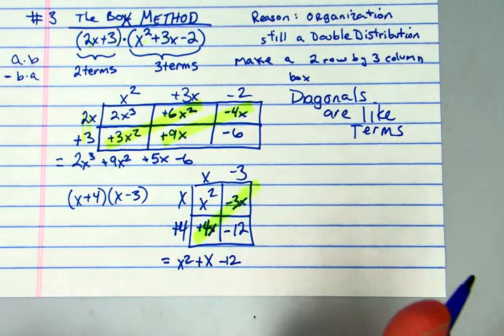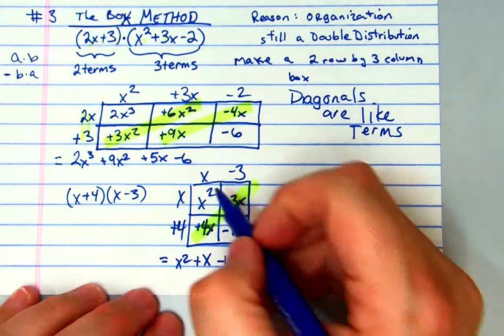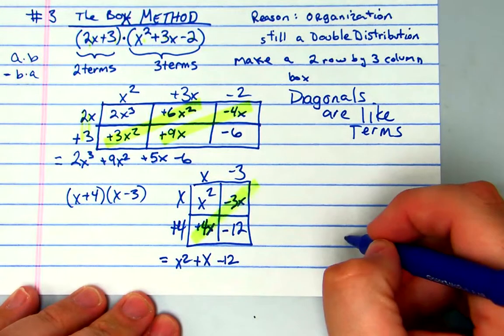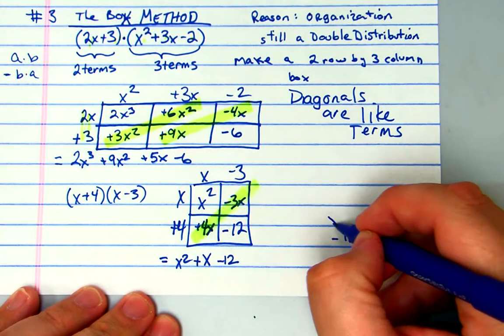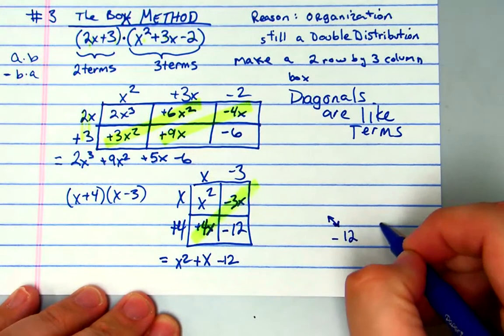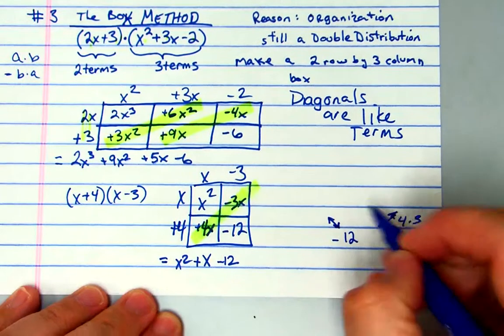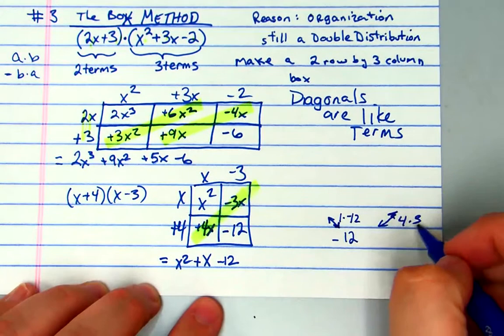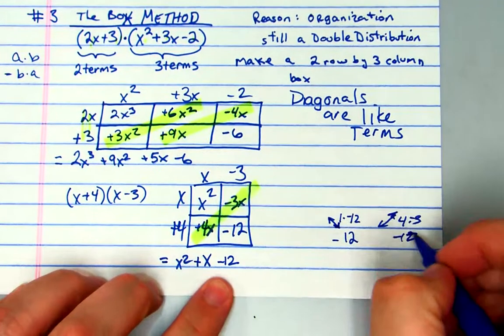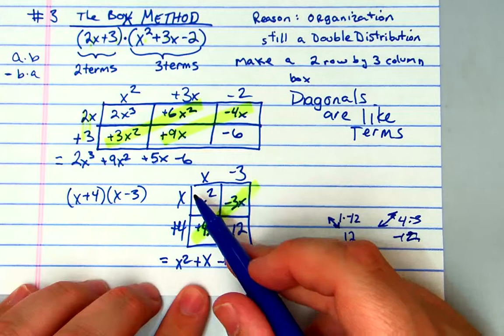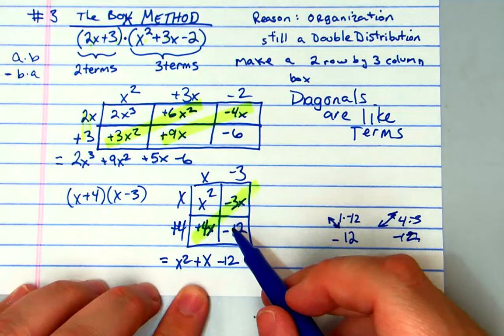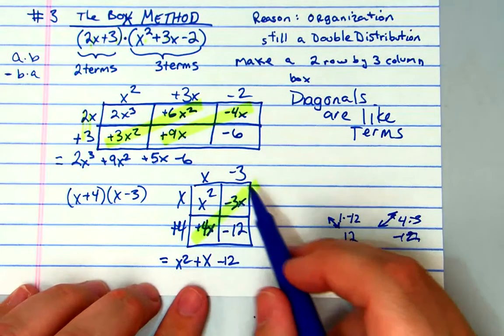Now just really quickly, multiply the numbers here. What do you get? One times negative 12 is negative 12. So this diagonal, the product is negative 12. What's 4 times 3? This diagonal is 4 times 3. Four times negative 3 is negative 12. This is a really cool idea that the product of this diagonal is equal to the product of this diagonal, and this is what's going to help us factor later on.